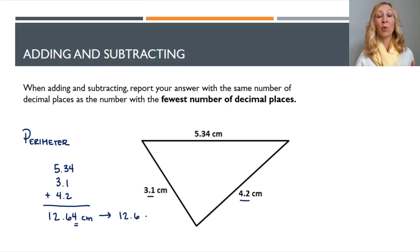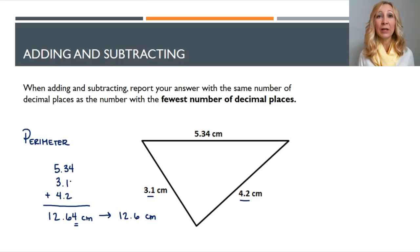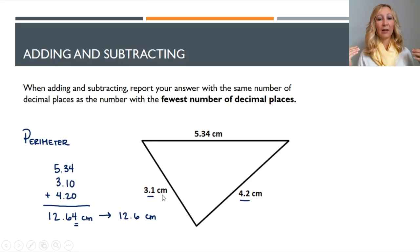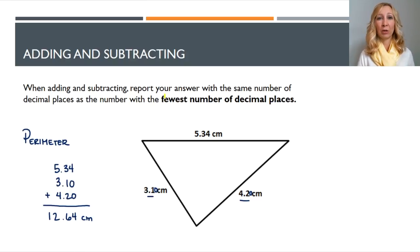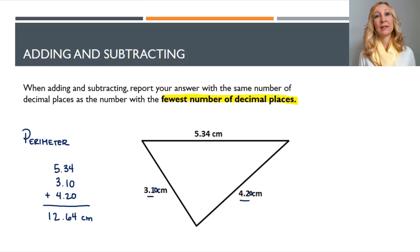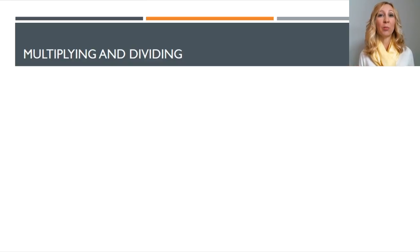You don't know that it's 12.64 because two of those measurements didn't go out to the hundredths place. This has to be rounded to 12.6 — the tenths place — because two of your measurements only go out to the tenths place. However, if you measured all sides with the same ruler and got 3.10 and 4.20, all measured out to the hundredths place, then you can report 12.64 centimeters. So when you're adding and subtracting, your answer should be reported with the same number of decimal places as the number with the fewest decimal places.